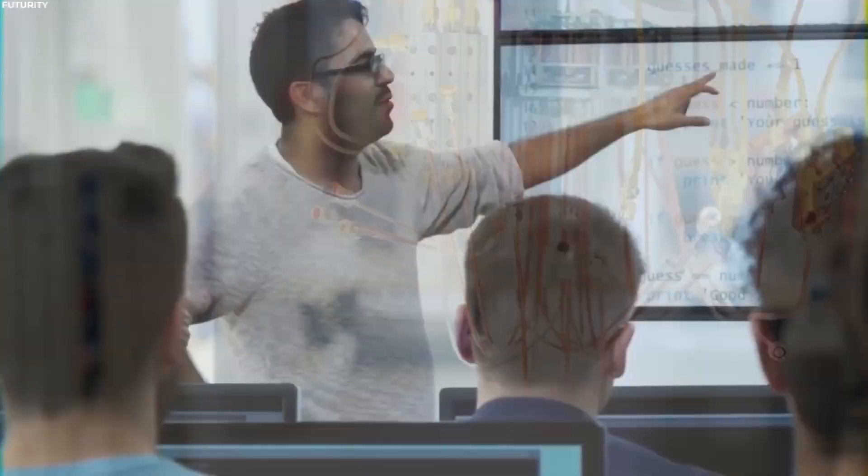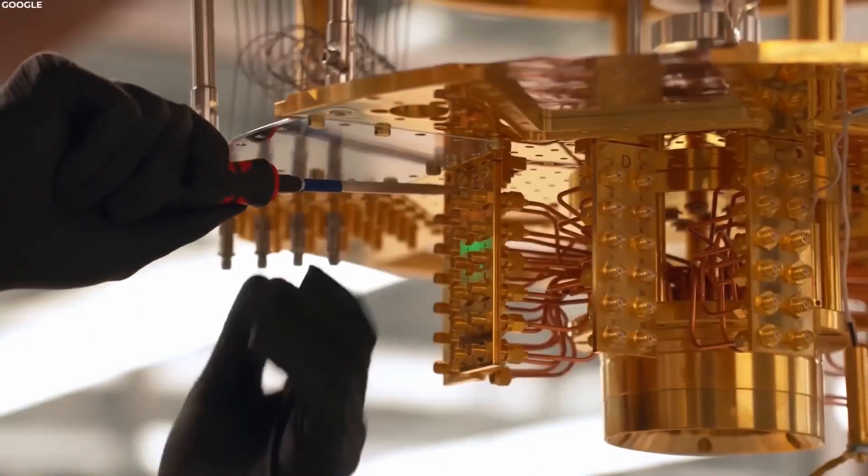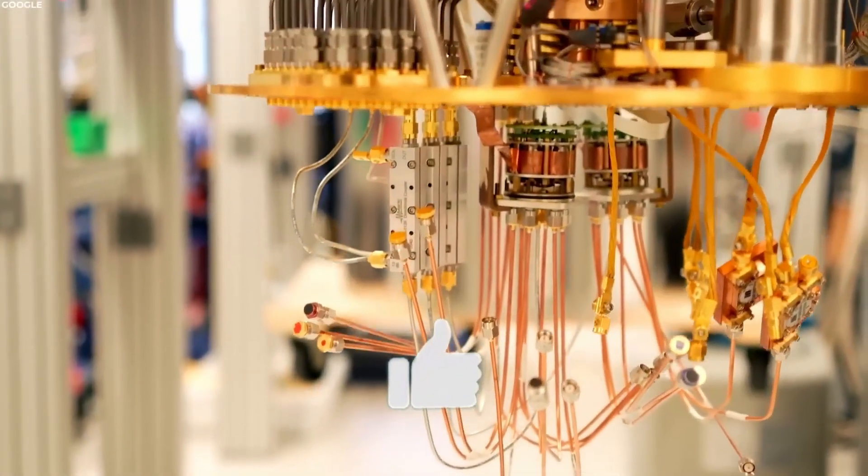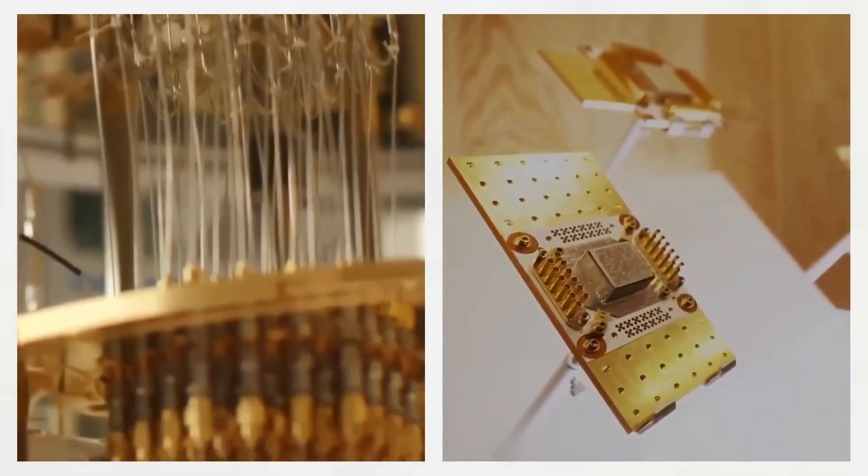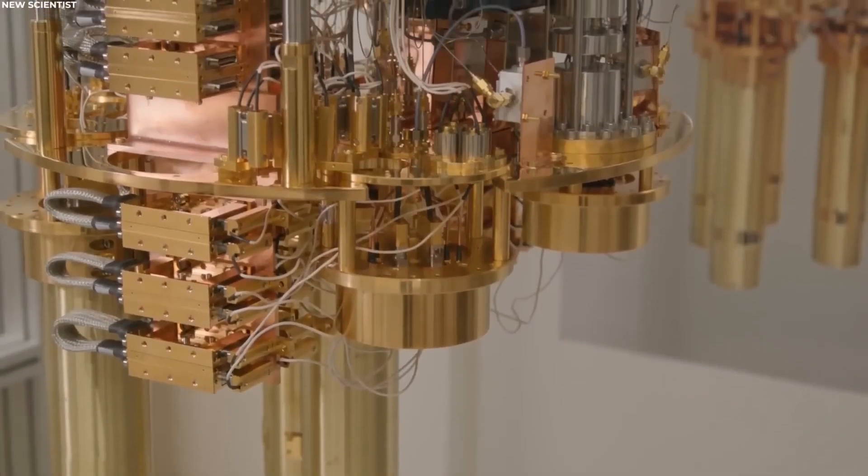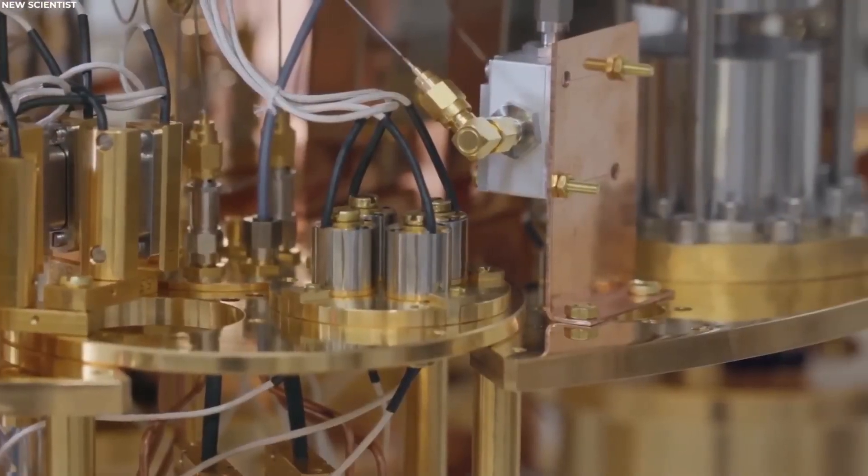But wait, there's another trick up the sleeve of quantum computers: entanglement. This is a unique phenomenon where pairs of qubits become intertwined, and the state of one, whether it's 0 or 1, can depend on the state of another. Picture a set of twins feeling each other's emotions, even if they are continents apart. That's entanglement in a nutshell.